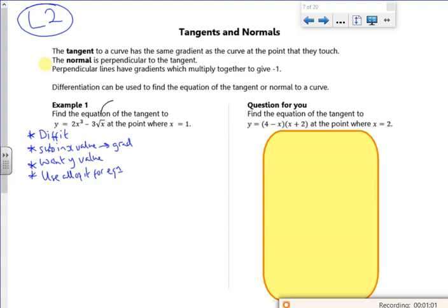Right, so index form first. That's x to the power half, isn't it? Obviously, 2x cubed. And this is a whole new. Minus 3x to the half.